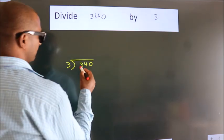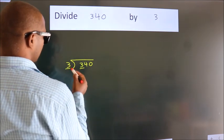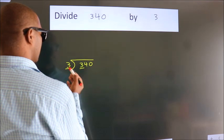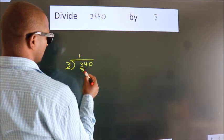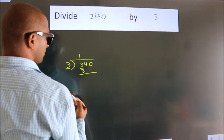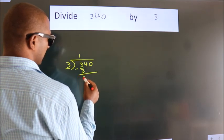Next, here we have 3. Here 3. When do we get 3? In the 3 table. 3 once is 3. Now we should subtract. We get 0.